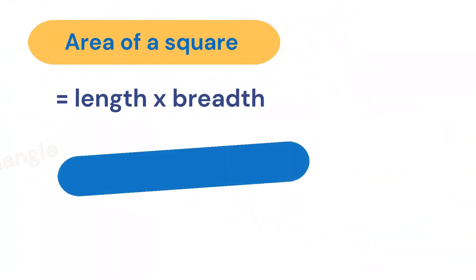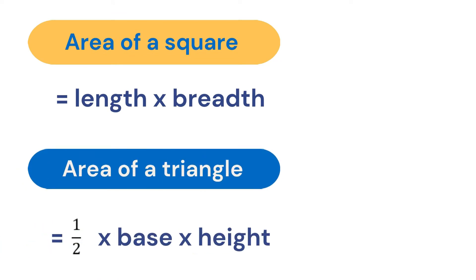Now let's see what is area. Area of a square equals length multiplied by breadth. Area of a triangle equals half multiplied by base multiplied by height.